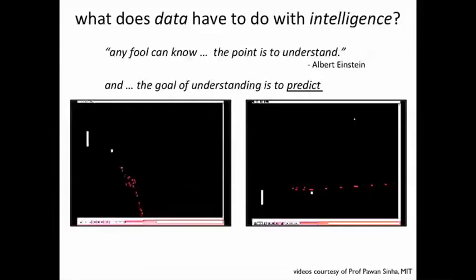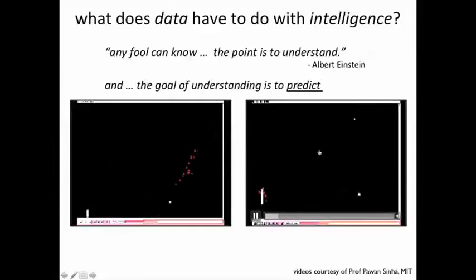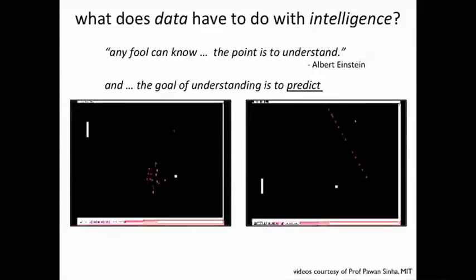Notice where the dots are and now notice this, look at this player on the right instead. There's a marked difference between how the player on the left plays versus how the player on the right plays. Can any of you figure this out?